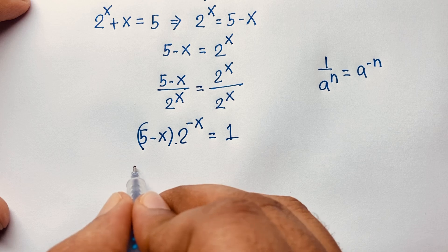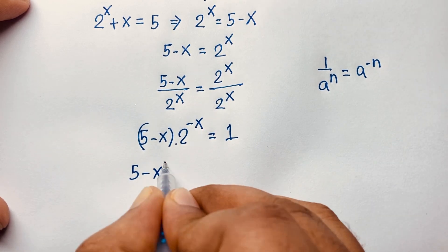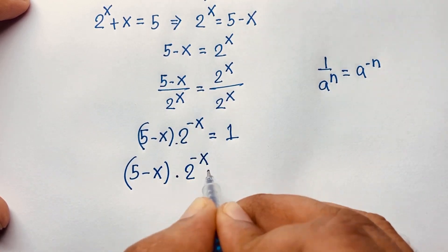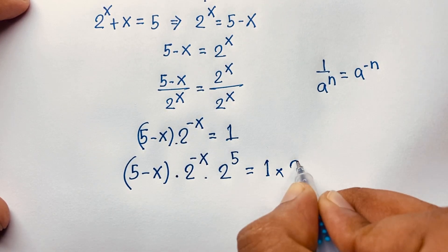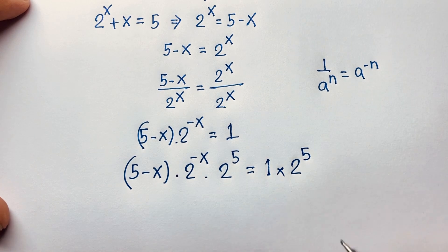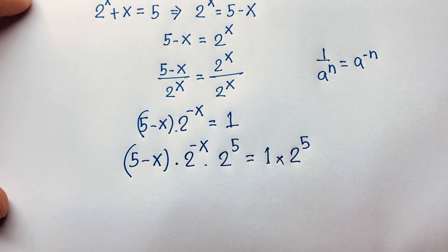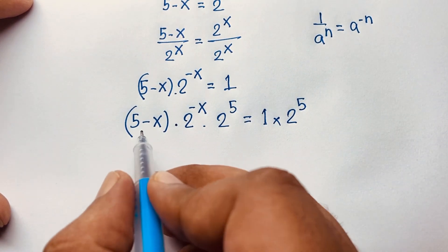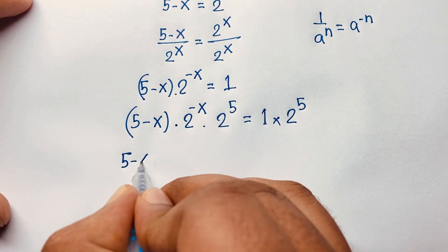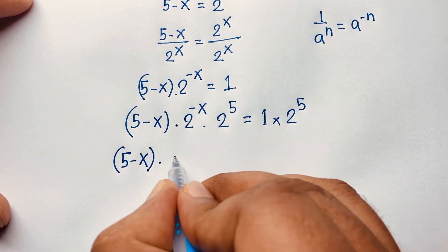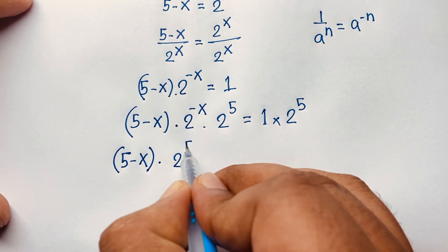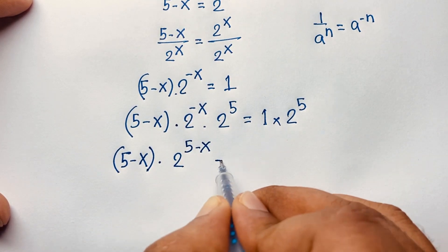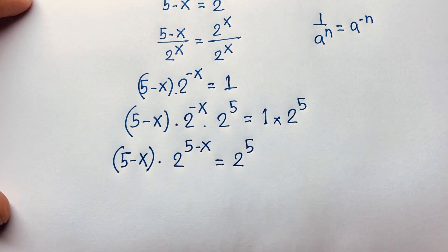Now I multiply both sides by 2 to the power 5, so we get: (5 minus x) times 2 to the power negative x times 2 to the power 5 is equal to 1 times 2 to the power 5. I multiply both sides by 2 to the power 5 because I want to use the Lambert W function. Adding the exponents, (negative x plus 5), the expression becomes: (5 minus x) times 2 to the power (5 minus x) is equal to 2 to the power 5.